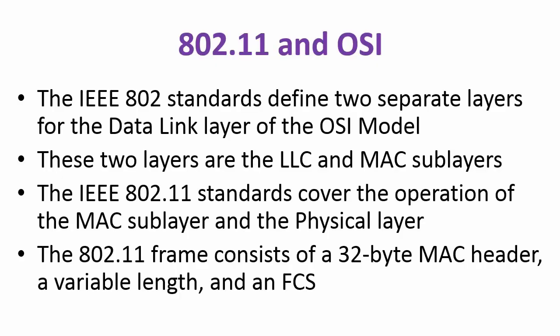The IEEE 802 standards define two separate layers for the data link of the OSI model: the LLC and the MAC sublayers. The 802.11 standards cover the operation of the MAC sublayer and the physical layer. The 802.11 frame consists of a 32-byte MAC header, variable length body, and a frame check sequence.